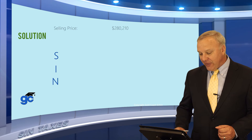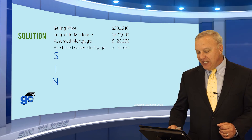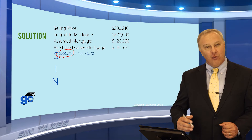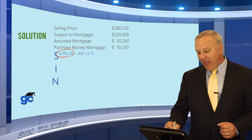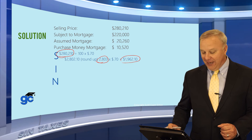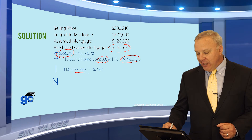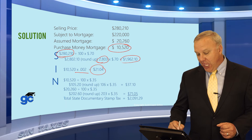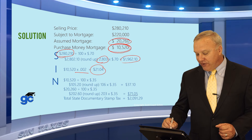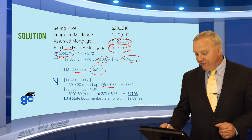Let's take this further with a full SIN example. The sales price is $280,210, subject to a mortgage of $220,000, an assumed mortgage of $20,260, and a purchase money mortgage of $10,520. For the deed stamp: $280,210 divided by 100, rounded up to $2,803, gives a deed stamp of $1,962.10. For the intangible tax on the new mortgage of $10,520, multiply by 2 mils: $21.04. For the note tax on the purchase money mortgage: $10,520 divided by 100, rounded up to $106, times $0.35 equals $37.10.